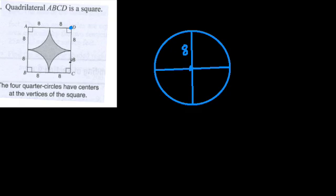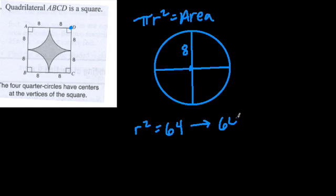So now, if I want to find the areas of all those quarters, I use my formula for the area of a circle, pi r squared, and here the radius is eight, so r squared is 64, right, eight times eight is 64, and then the area is just 64 pi.